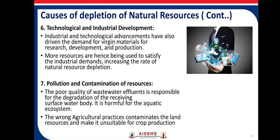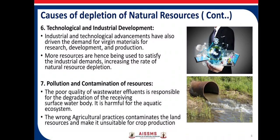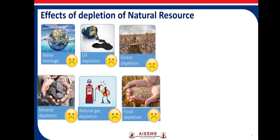The next cause is pollution and contamination of resources. The poor quality of wastewater effluent is responsible for degradation of the receiving surface water body; it is harmful for aquatic ecosystems. Wrong agricultural practices contaminate land resources and make them unsuitable for crop production. In this image, you can see untreated effluent being discharged into water resources, causing contamination.